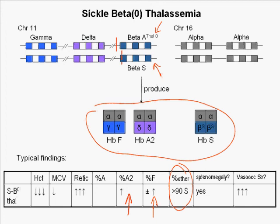It is often difficult to distinguish between patients with sickle cell anemia and sickle beta zero thalassemia. The clues to differentiate them are the findings of microcytosis, elevated hemoglobin A2, and persistent splenomegaly in the patients with sickle beta zero thalassemia. The peripheral smears are very similar to those found in homozygous SS sickle cell anemia.